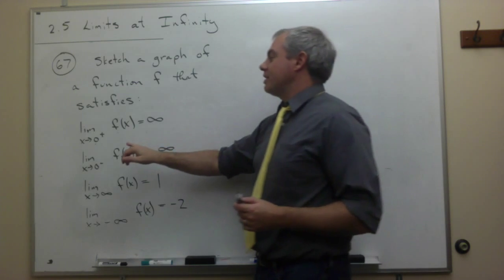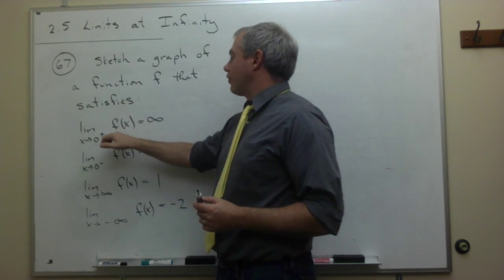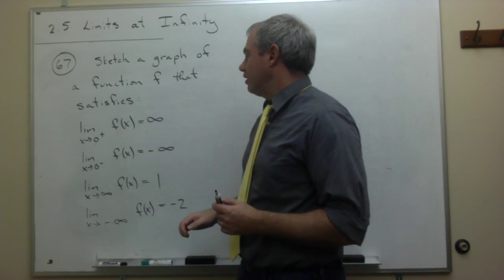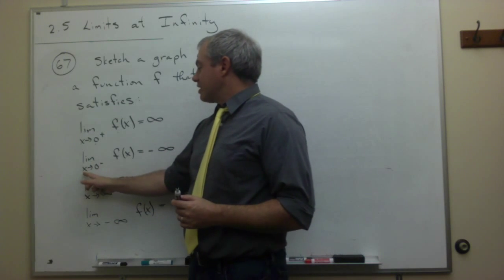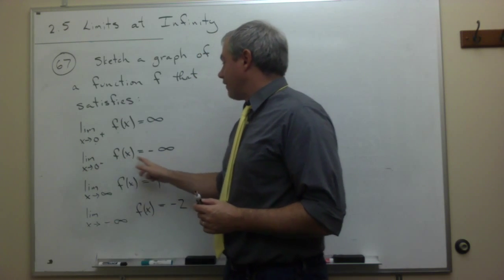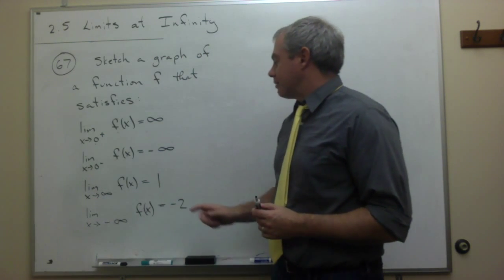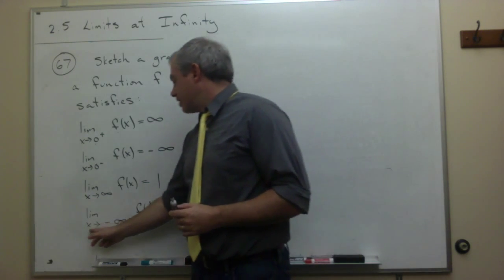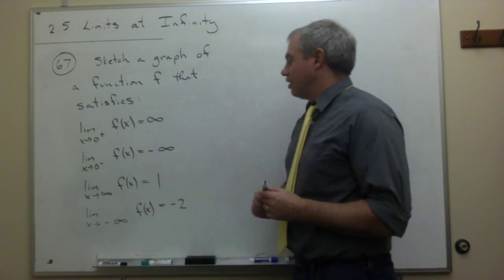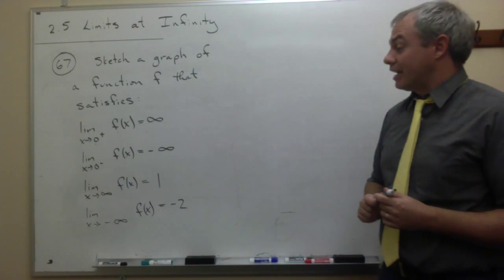First of all, we want the limit as x goes to 0 from the right of f of x to be infinity. We want the limit as x goes to 0 from the left of f of x to be minus infinity. We want the limit as x goes to infinity of f of x to be 1, and we want the limit as x goes to minus infinity of f of x to be negative 2.